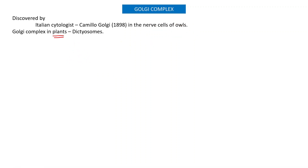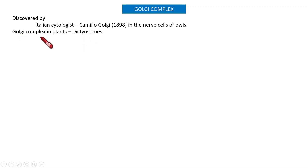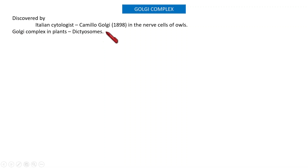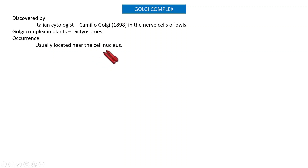In plants, the Golgi complex has another name: dictyosomes. On hearing this term, don't get confused — it is the same as the Golgi complex. The Golgi complex in plants is simply called dictyosomes.